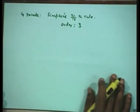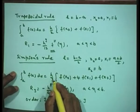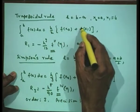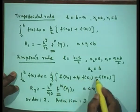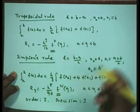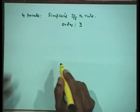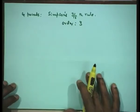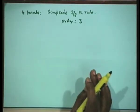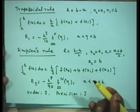For Newton-Cotes formulas beyond a certain order (six, seven, or eight), the weights (lambdas) become negative, which introduces a chance of round-off error due to cancellations. Therefore, the most popular methods of numerical integration are the trapezoidal rule, Simpson's rule, and some modifications to these to get better accuracy.